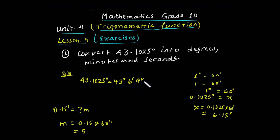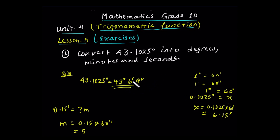So the fraction of a degree can be changed into a whole number of minutes, and the fraction of a minute into a whole number of seconds. If you look at this, you can see that in degrees, minutes and seconds — the whole number of minutes is 6, and the whole number of seconds is 9. So 43 degrees, 6 minutes and 9 seconds is the same as 43.1025 degrees.